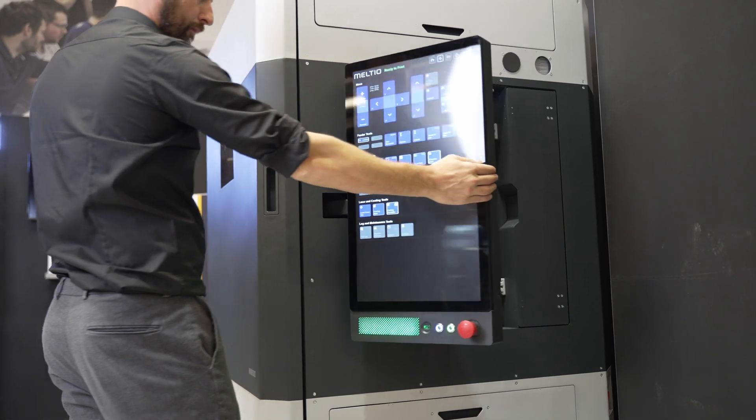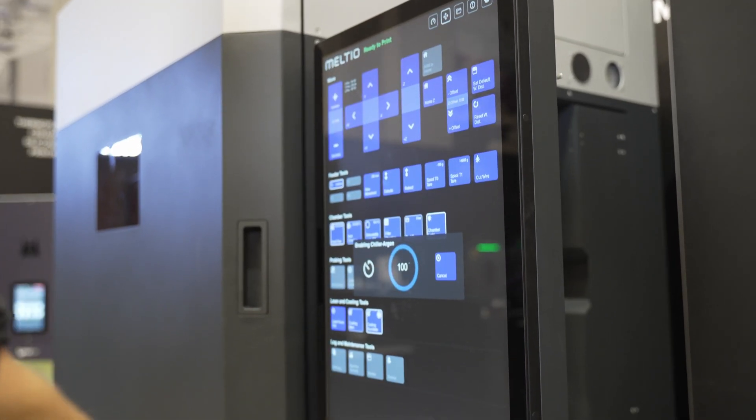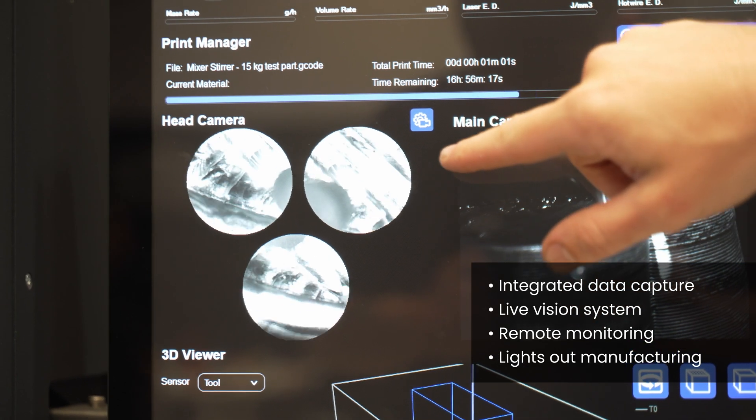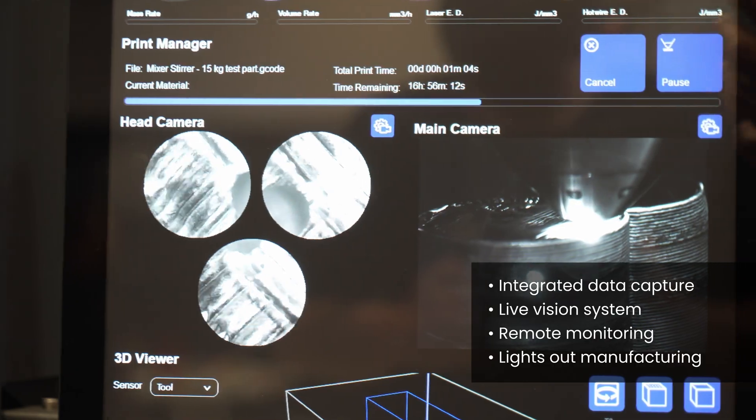This generation 2 machine, a re-engineered solution from the original Meltio products, has integrated data capture, a live vision system, and remote monitoring to allow us to do lights-out manufacturing.